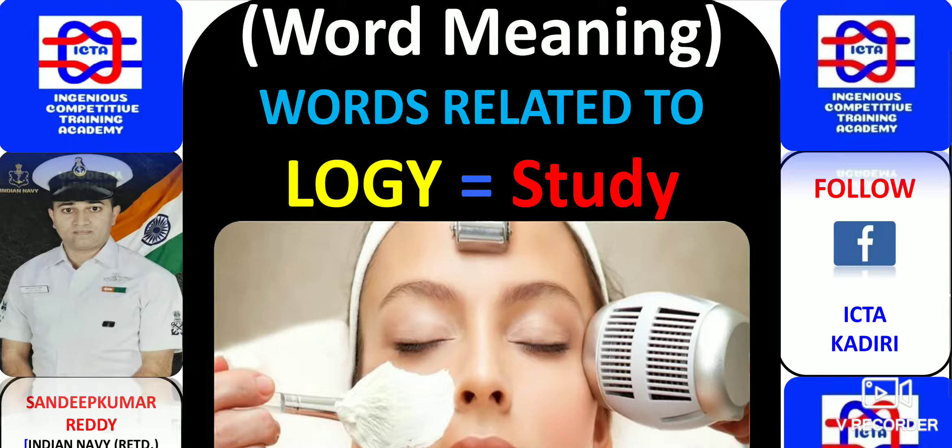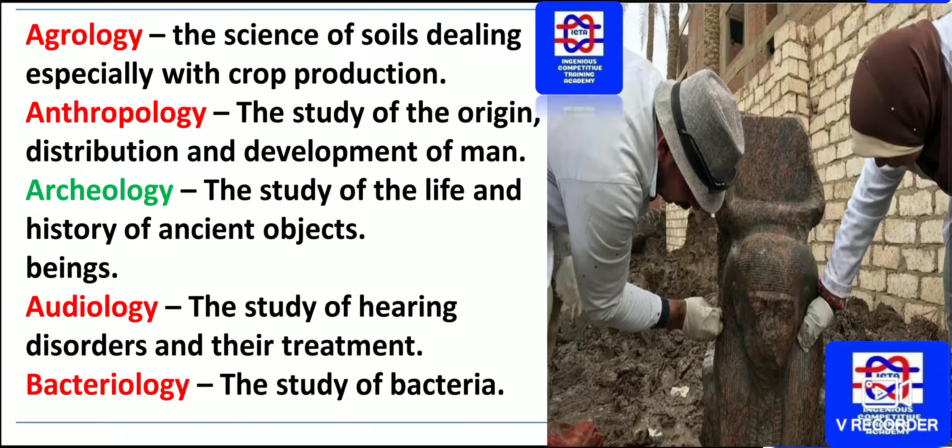As you can see how exactly dermatology concerns the study of whatever has been given. Initially we have agrology — the science of soil dealing especially with crop production. Agro means soil, so it deals with soil as well as crop production.